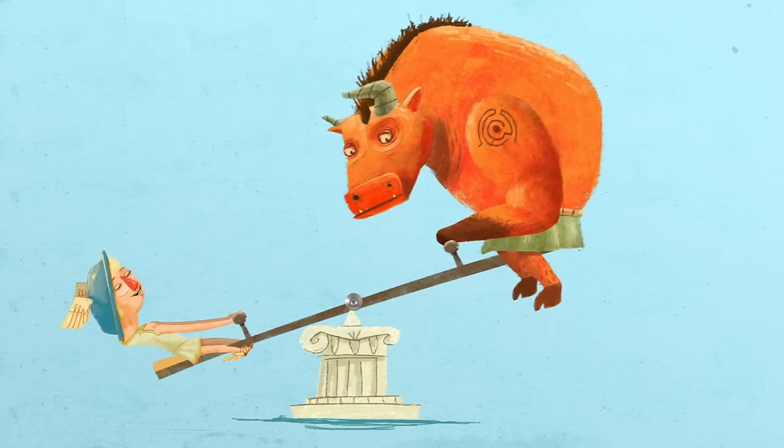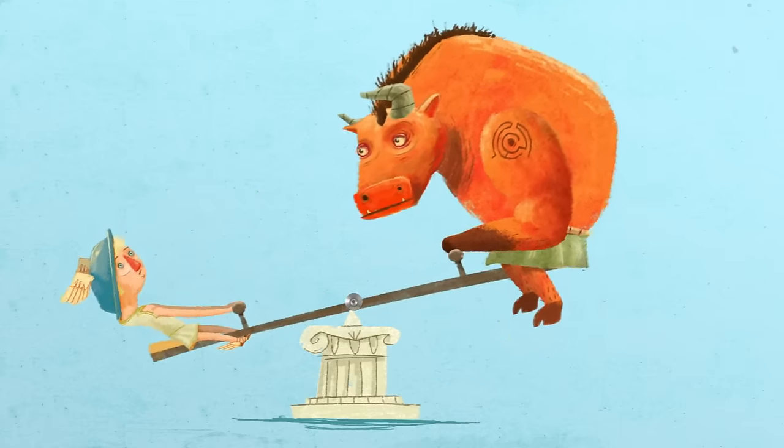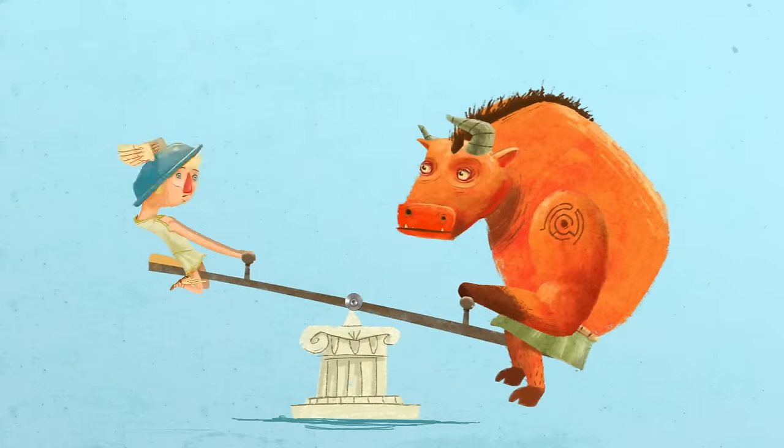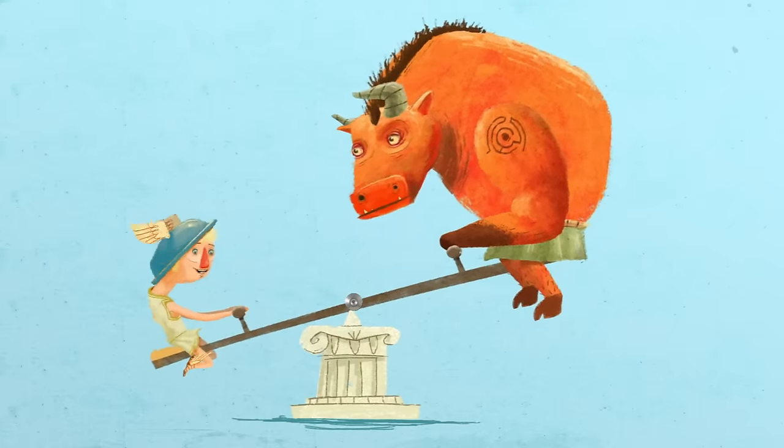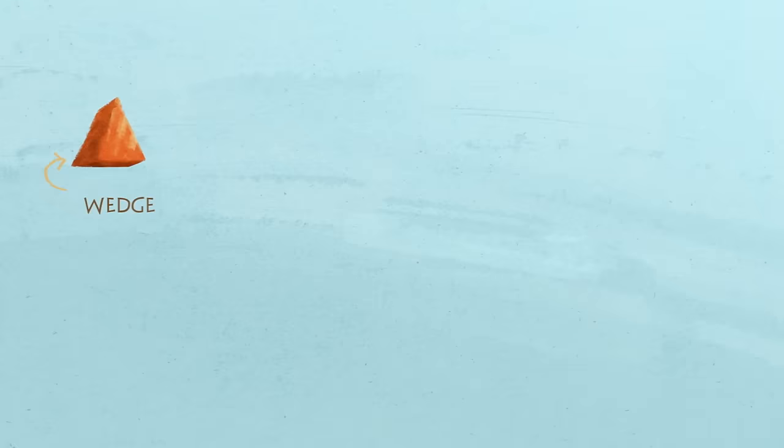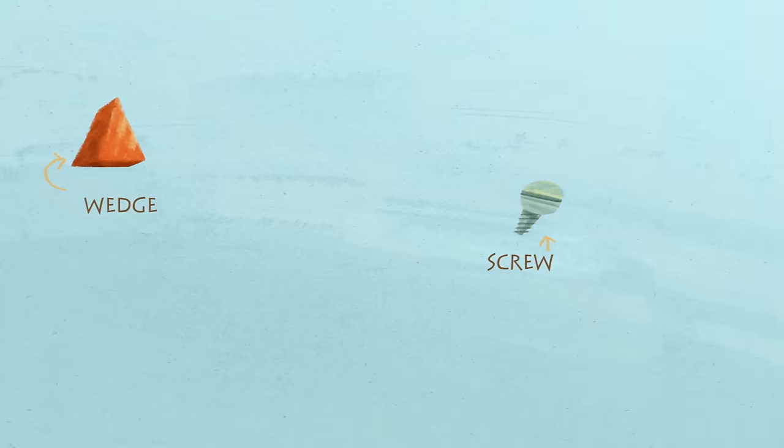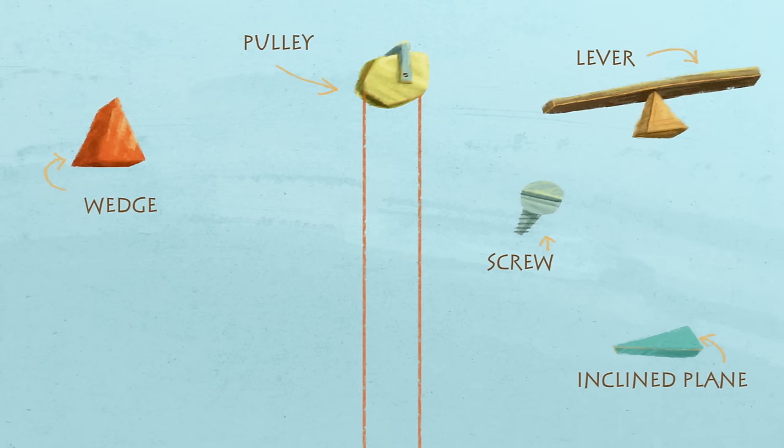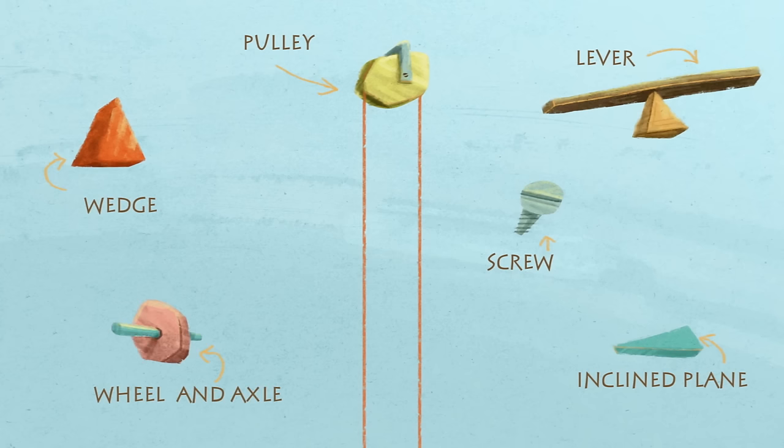This may seem simple and intuitive, but what you're actually doing is using a lever to lift a weight that would otherwise be too heavy. This lever is one type of what we call simple machines, basic devices that reduce the amount of energy required for a task by cleverly applying the basic laws of physics.